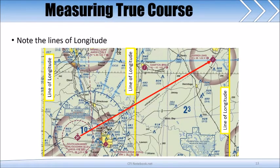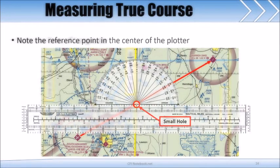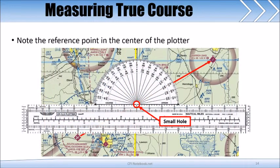Highlighted here in yellow are the lines of longitude. Since these lines are in reference to true north, they will be used to measure our true course. Now that we have drawn our route and found the lines of longitude, we will need to grab our plotter again.